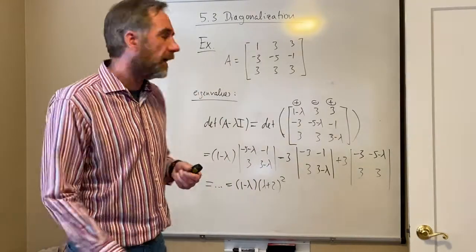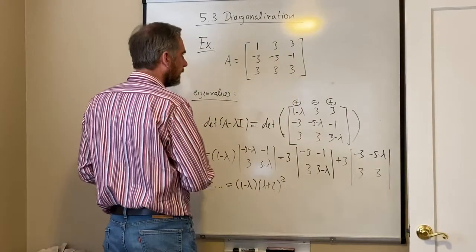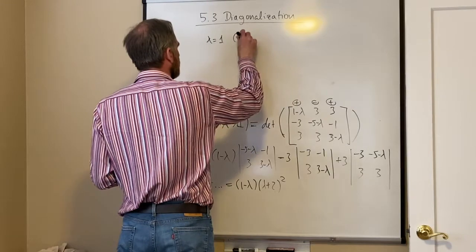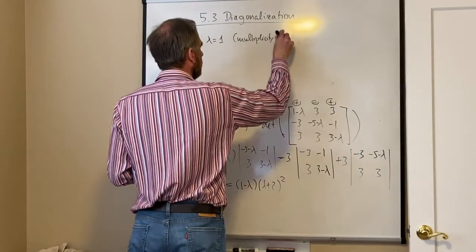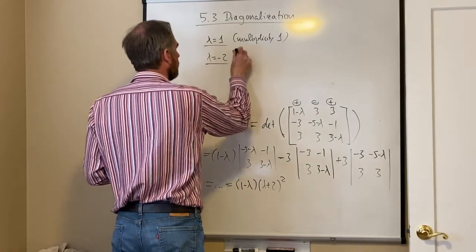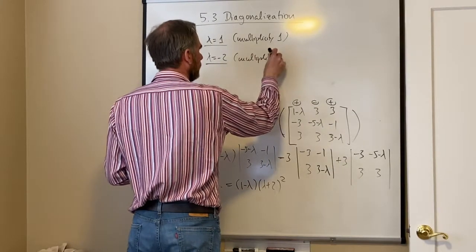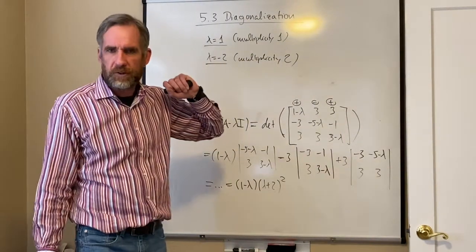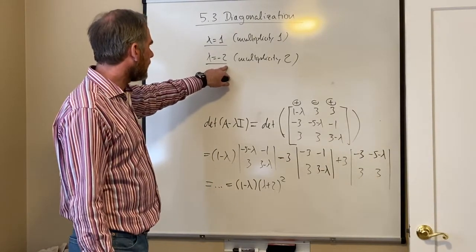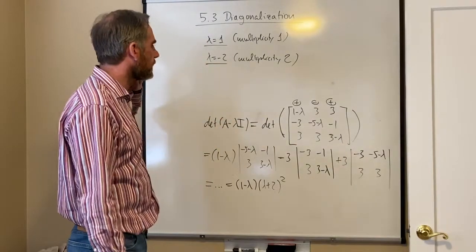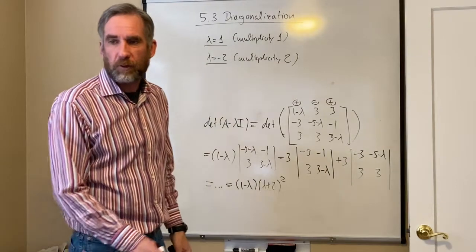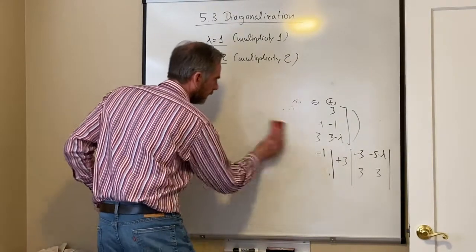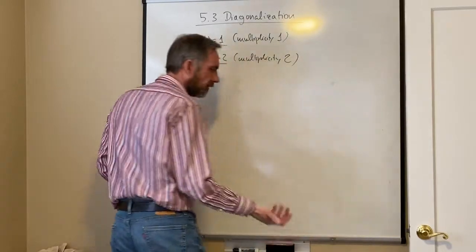We have two eigenvalues: 1 and negative 2. Lambda equals 1 with multiplicity 1, and lambda equals negative 2 with multiplicity 2. The result about distinct eigenvalues can't be used here because lambda equals negative 2 occurs with multiplicity 2. So we have to go the long way to figure out whether this matrix is diagonalizable — we must find the eigenvectors and check whether they're linearly independent.